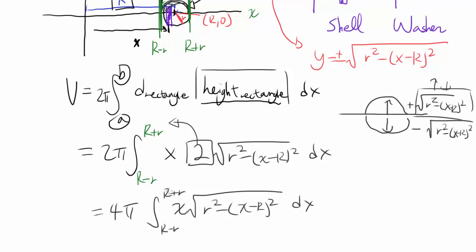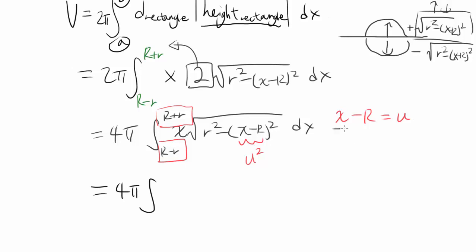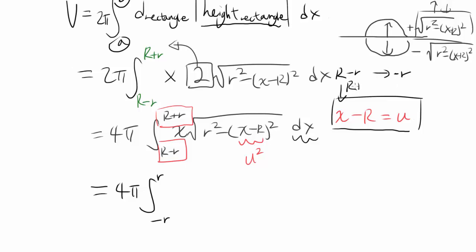The bounds R − r and R + r are complex, and having (x − R)² inside the square root is difficult to work with. So we use the substitution u = x − R. This changes the bounds: when x = R − r, u = −r, and when x = R + r, u = r. The bounds simplify to −r to r.